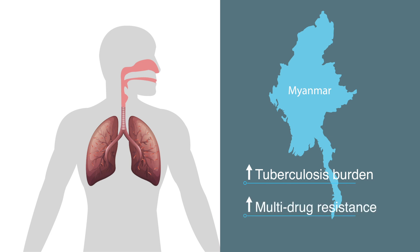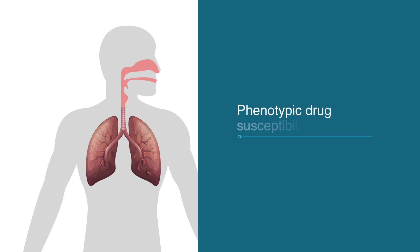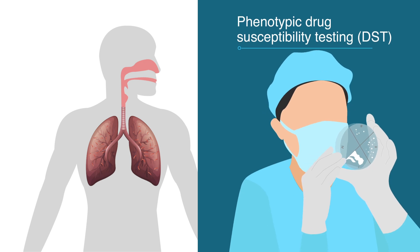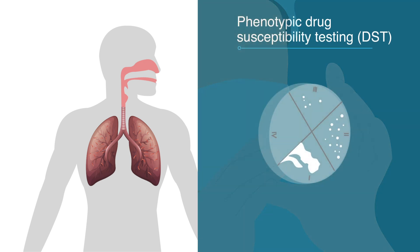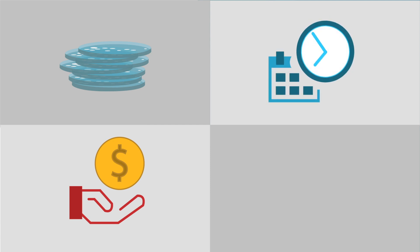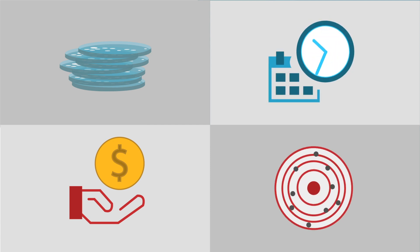Drug-resistant tuberculosis is often identified using a method known as phenotypic drug susceptibility testing, or phenotypic DST, in which bacteria are grown on plates containing known quantities of antibiotics. While simple and cost-effective, this method can be time-consuming and unreliable in some settings.